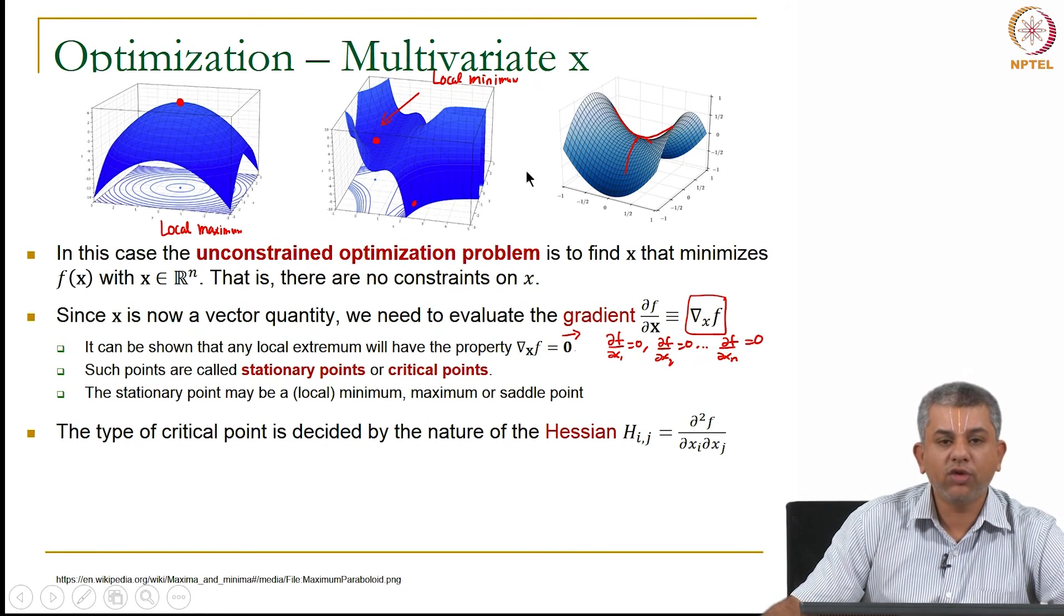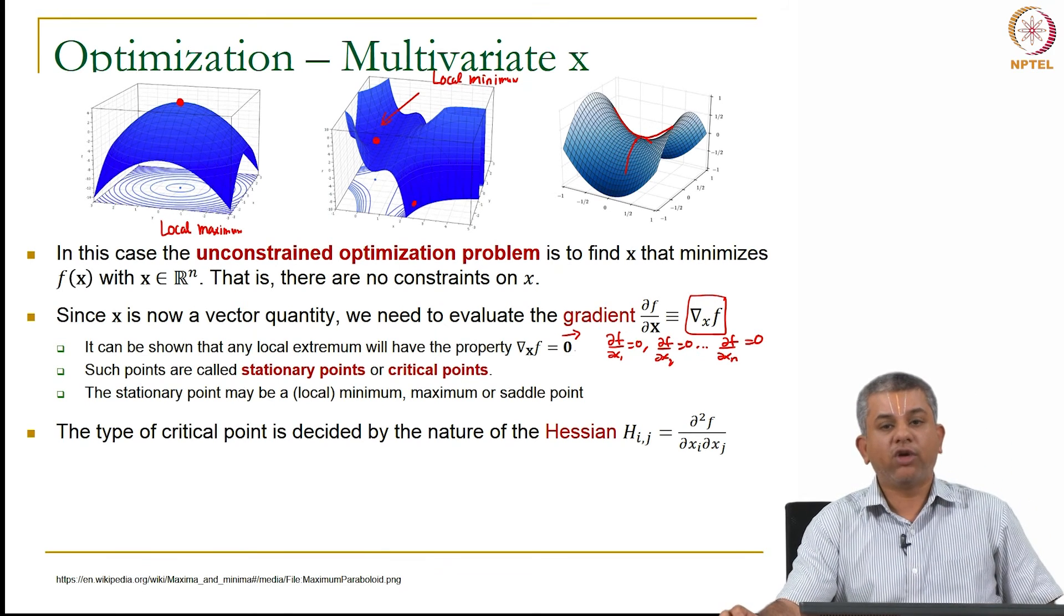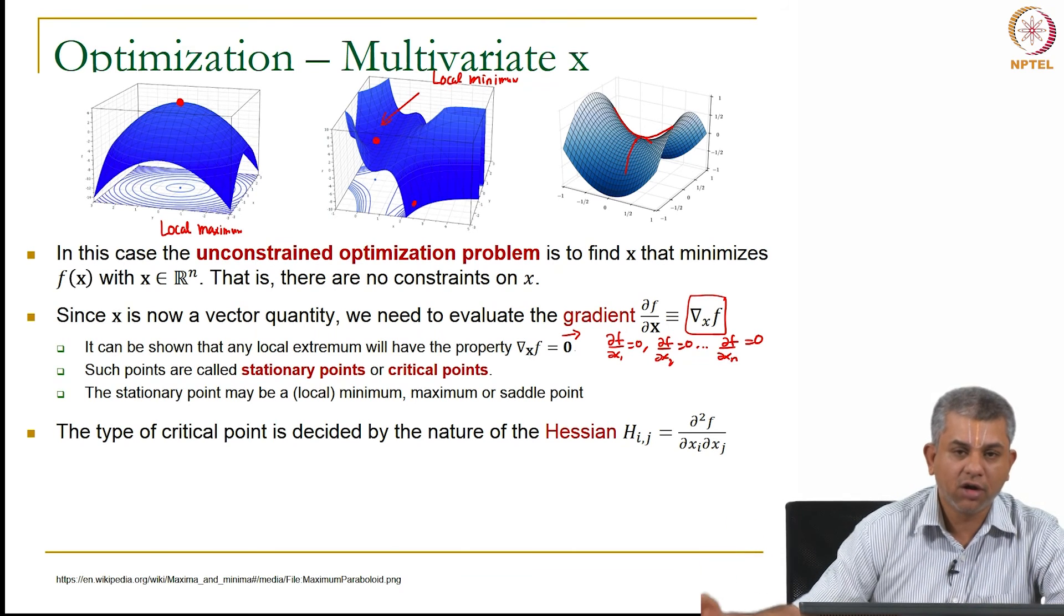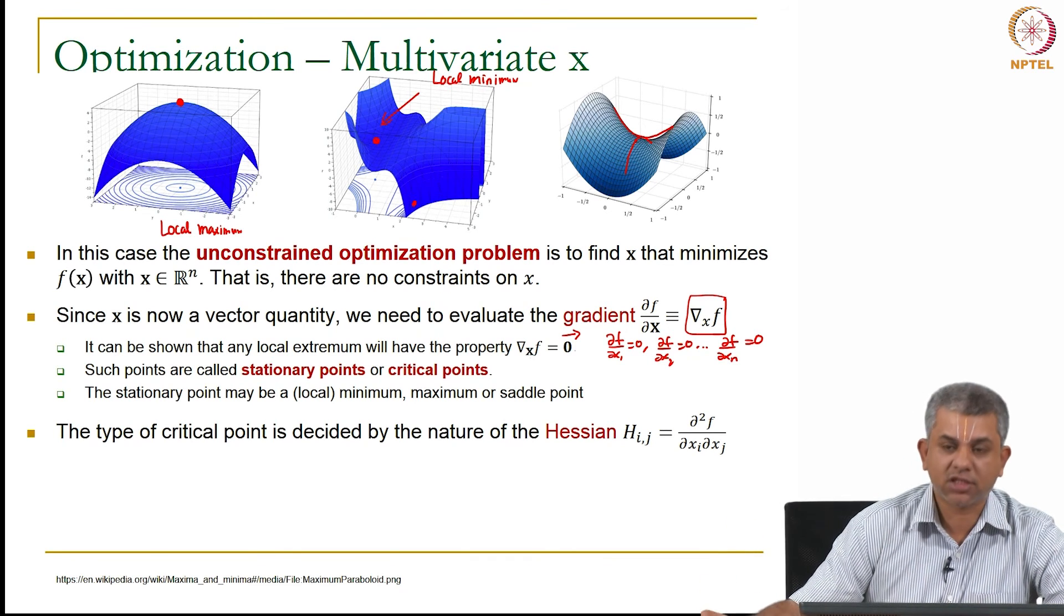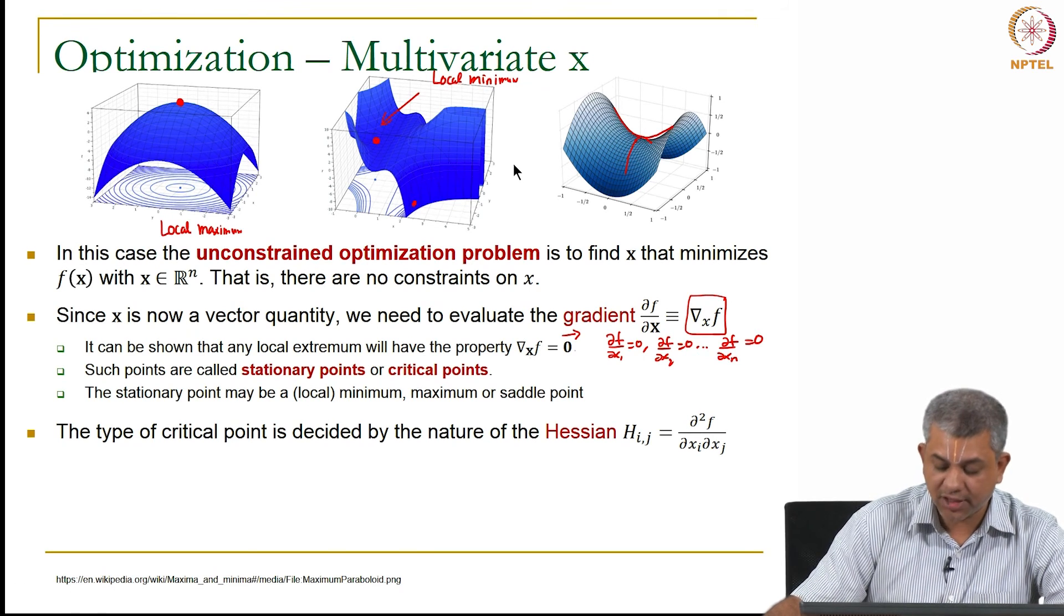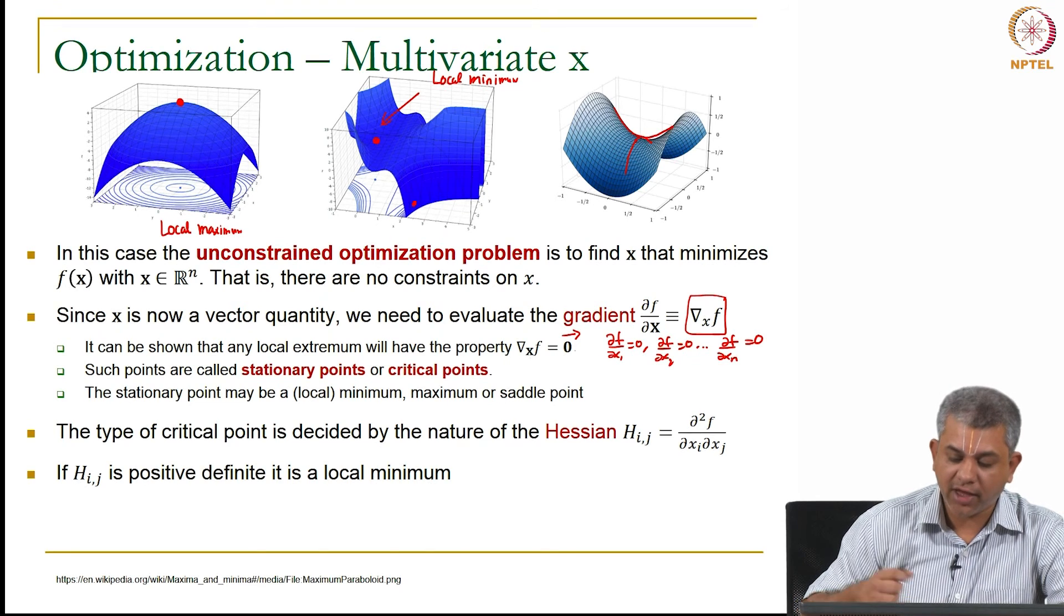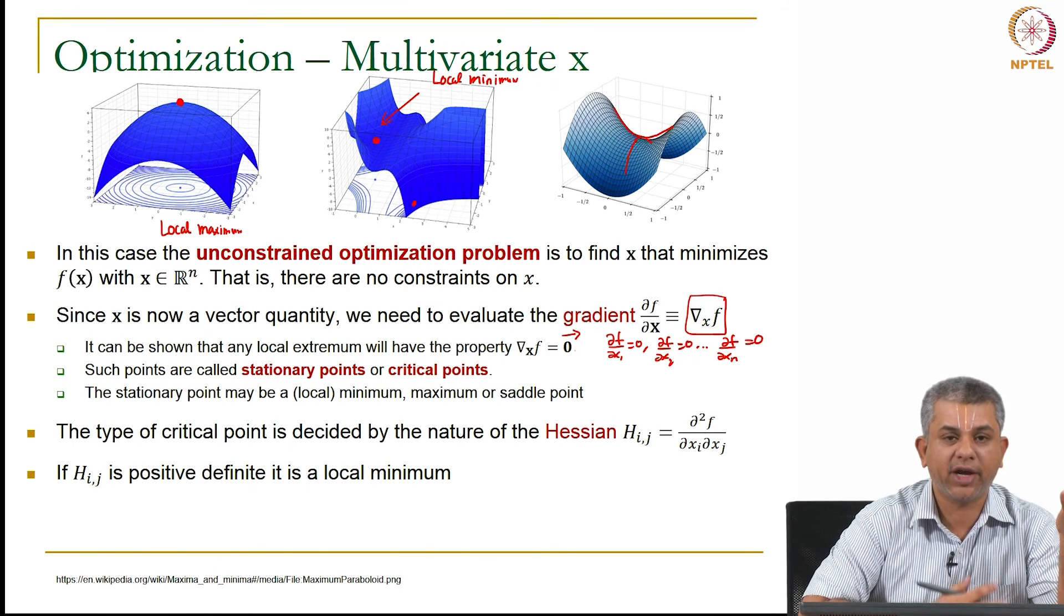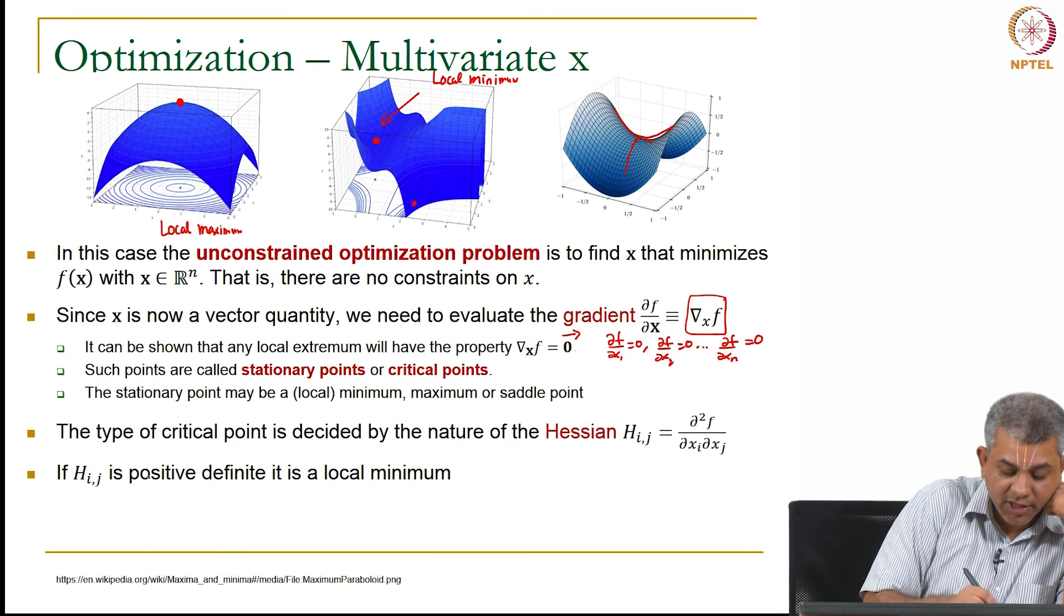Now how you find out whether this is a local minimum, maximum or whether it is a saddle point now depends on the Hessian rather than the simple second derivative. Remember for vectors the generalization of a second derivative is the Hessian. So as we saw on the previous slides, Hessian now is a matrix. Now unlike before I cannot simply say Hessian is positive, that has no meaning because it is a full matrix.